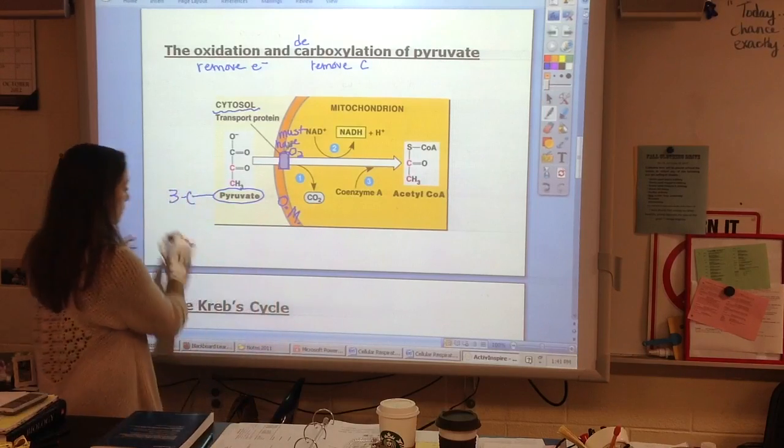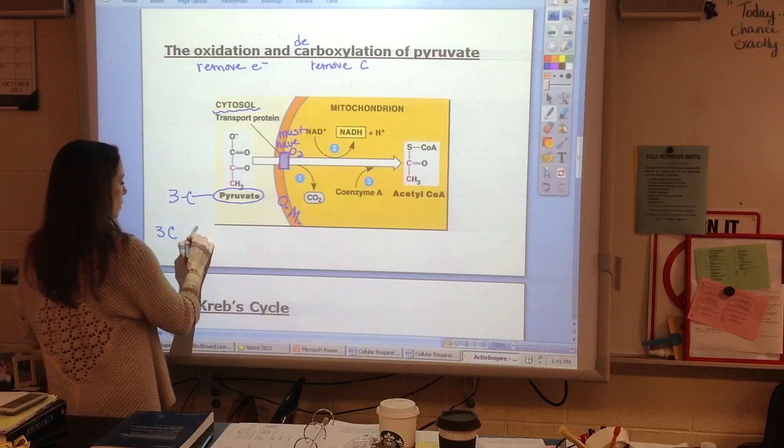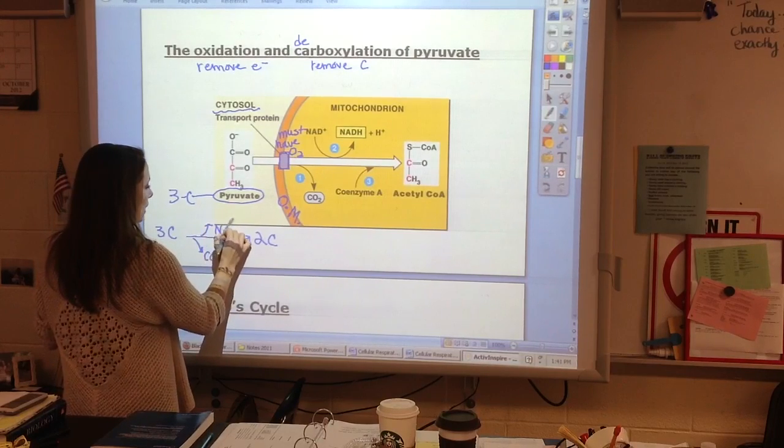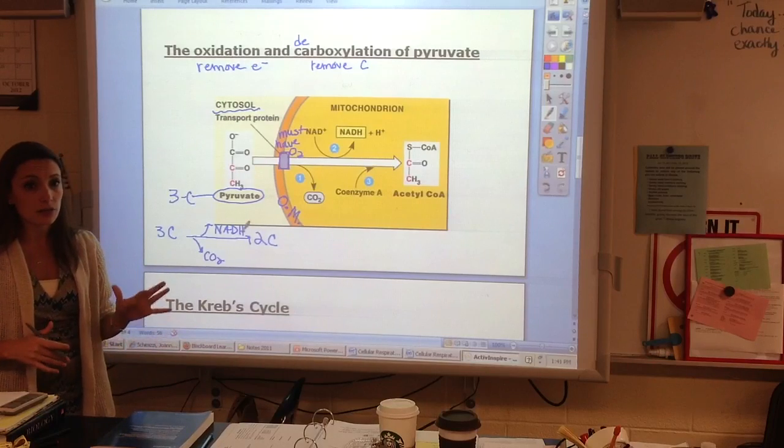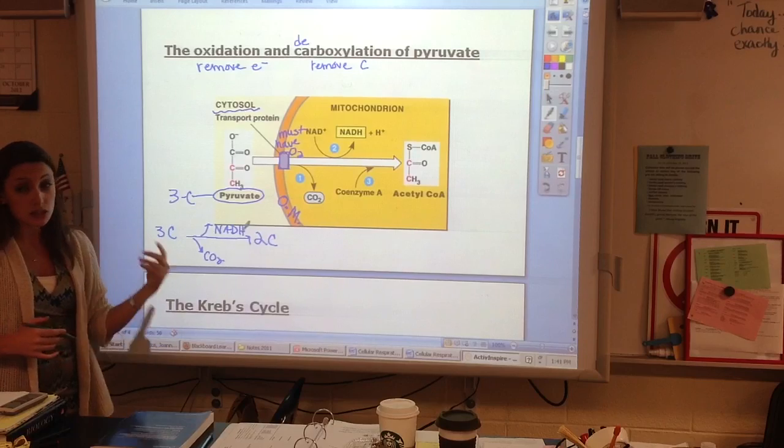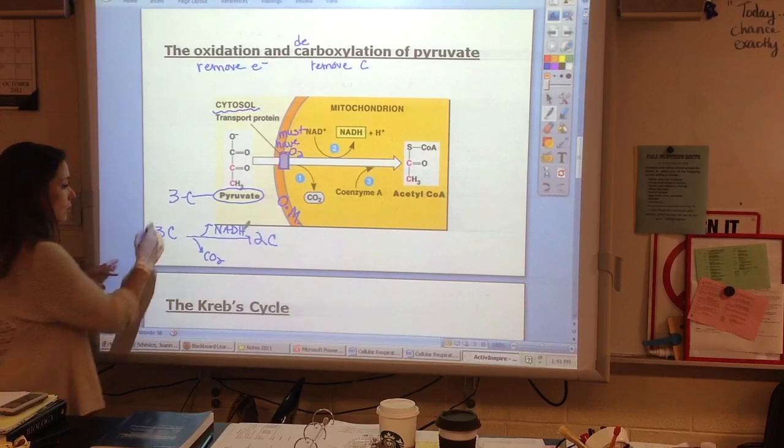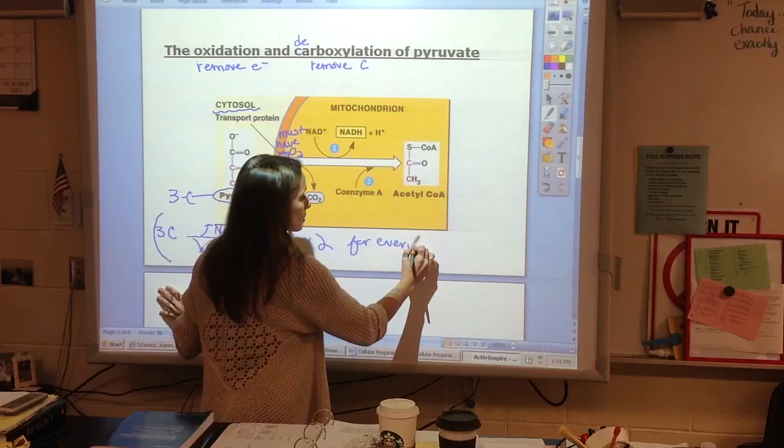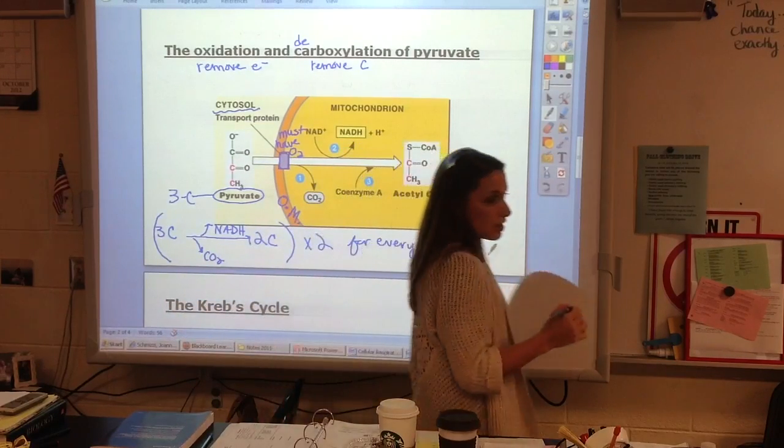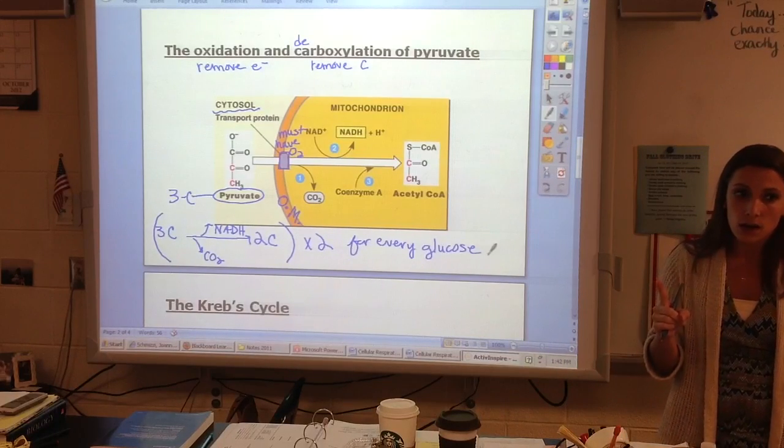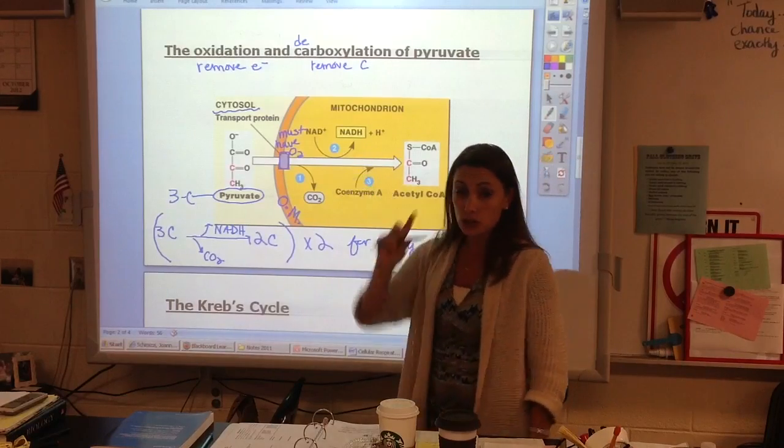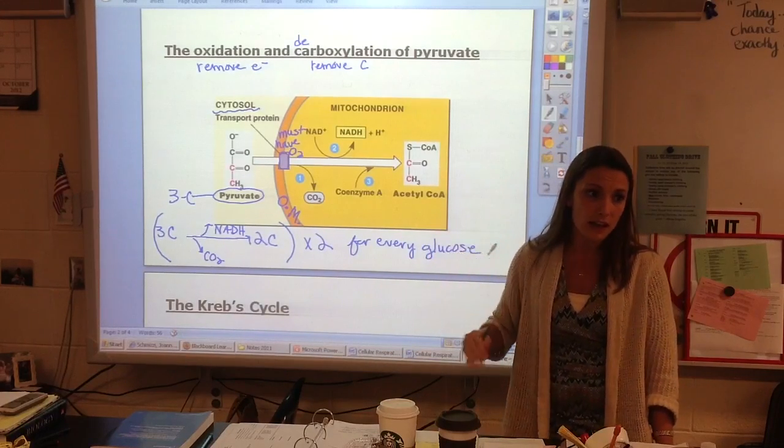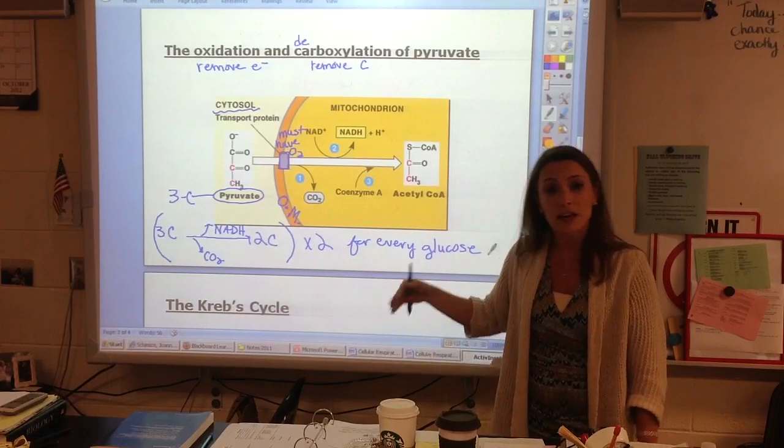At this point, we have gone from a 3-carbon to a 2-carbon, off has come a CO2, and off has come 1 NADH. Now, we have to pause and remember that we actually started this process with a 6-carbon. We broke it into two 3-carbons. Really, all of this is happening times two for every glucose. We're going to have to keep checking ourselves and reminding ourselves, if I put one glucose in, I will have actually released, at this point, two CO2s and gained two more NADHs. A good rule of thumb is to keep a running tally of how many NADHs do I have now. How many have I gotten total?